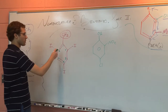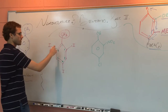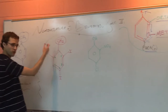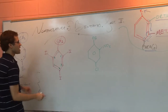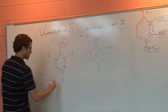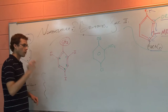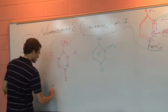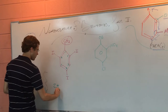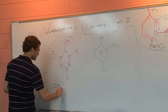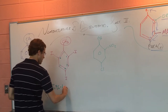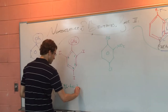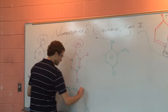Just to emphasize, it wouldn't matter if we'd numbered the other way — we'd still have iodines on two, four, and six. So this one we're going to name as 2,4,6-triiodotoluene.